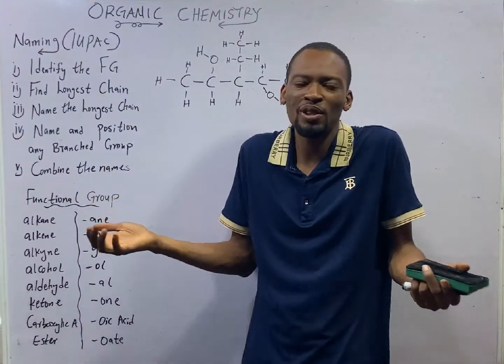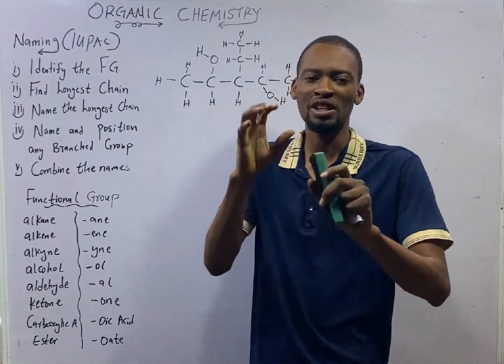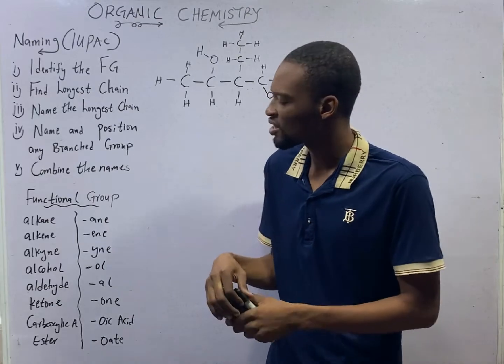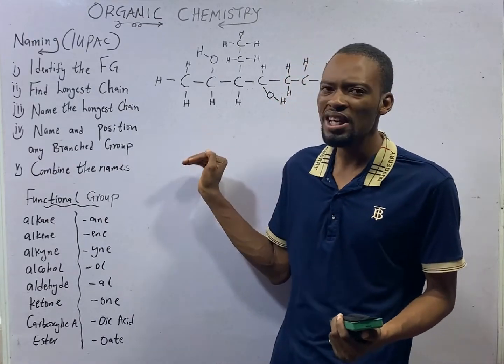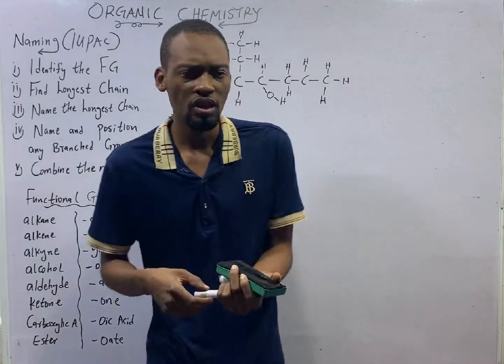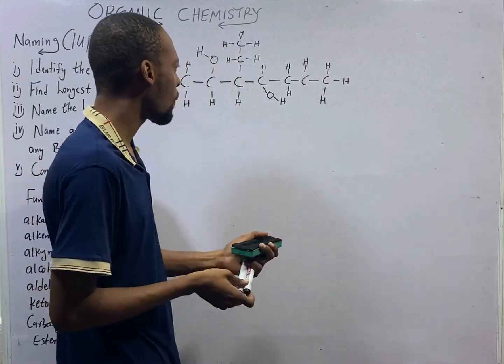This is episode number 84 of the 120 days to JAM chemistry with Flash Isaac. Our business today is to name this compound, name this compound.